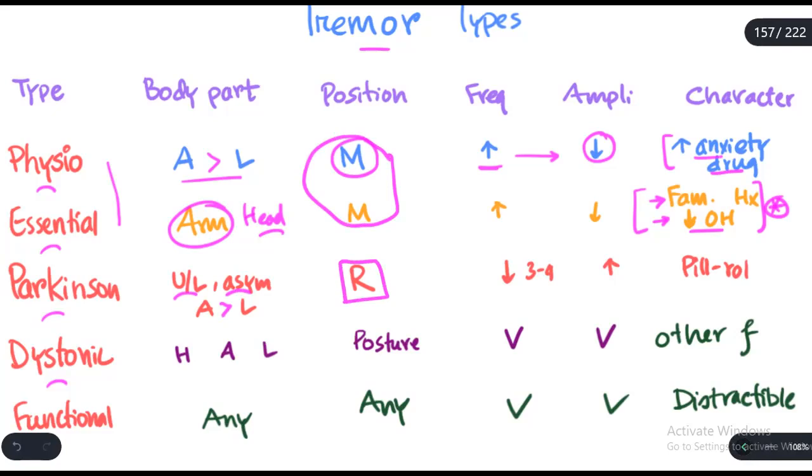Also, Parkinson tremor has a low frequency. Physiologic and essential tremor has high frequency, but Parkinsonian tremor has a low frequency. That means the amplitude will be high. And the typical character of Parkinsonian tremor is a peel-rolling tremor.